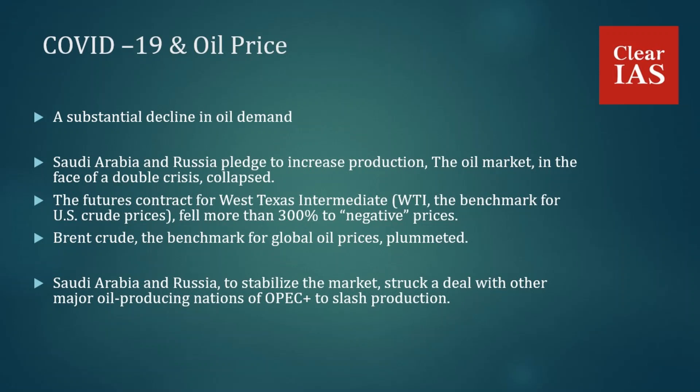The oil market, facing a double crisis, collapsed. Futures contracts for West Texas Intermediate (WTI) — the benchmark for US crude prices — fell more than 300 percent to negative prices because of oversupply. It was becoming difficult to find space for the storage of oil. Each futures contract trades for a month, and May contract holders didn't want to take delivery of the oil, incurring storage costs, and ended up paying to have the oil taken off their hands. This was the lowest crude oil price ever recorded — the previous lowest was immediately after World War II.